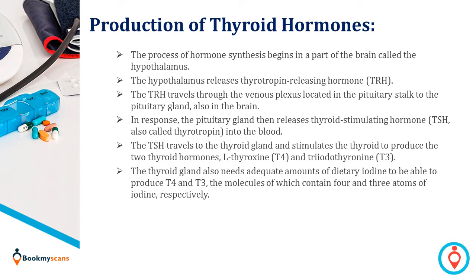The production of thyroid hormones: The process of hormone synthesis begins in a part of the brain called the hypothalamus. The hypothalamus releases thyrotropin releasing hormone (TRH). The TRH travels through the venous plexus located in the pituitary stalk to the pituitary gland, also in the brain.